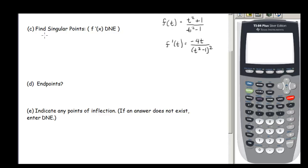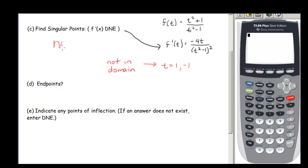Now let's find the singular points, if there are any. Looking at our derivative, we look for values that make the denominator equal 0. That would happen at t = 1 or t = −1, but remember those are restricted from our domain. So we end up with no singular points because the two that were possible aren't in our domain. Our endpoints are at negative 2 and positive 2, since our domain is restricted to be between −2 and 2.